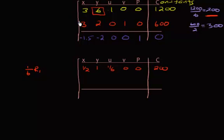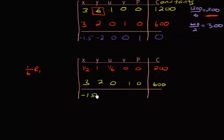We're not changing rows two and three, so row two stays as 3, 2, 0, 1, 0, 600; and row three stays as negative 1.5, negative 2, 0, 0, 1, and zero.